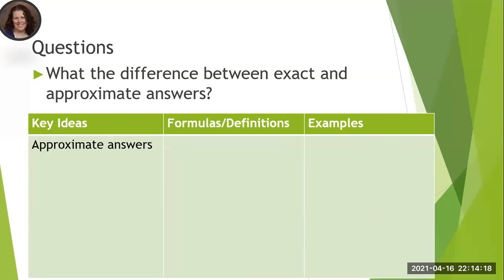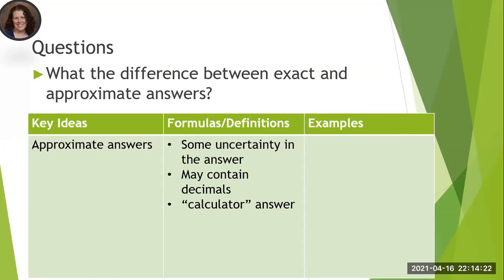So what's an approximate answer then? Well, approximate answers means there's a little bit of uncertainty. We might have some decimals. It's the calculator answer, meaning pi is 3.14, but there's more decimals, and E is 2.718 plus more decimals. And the fractions that we've talked about could be converted to decimals, but we don't have the whole thing.